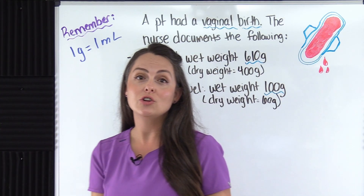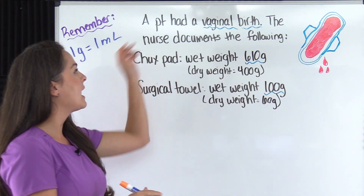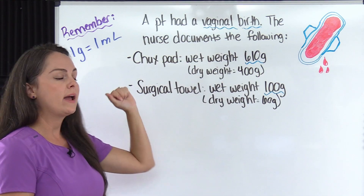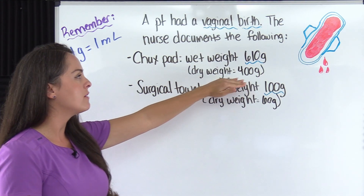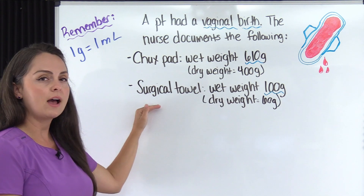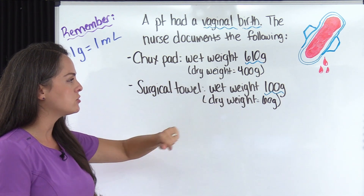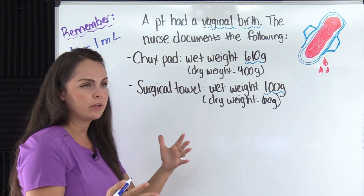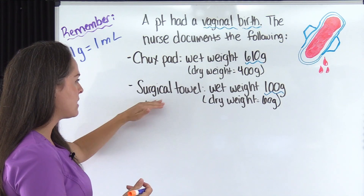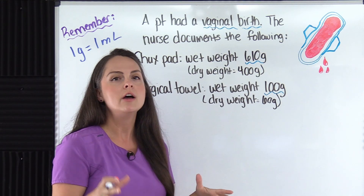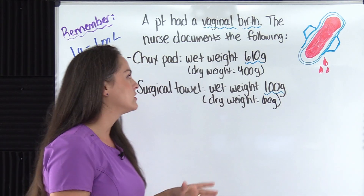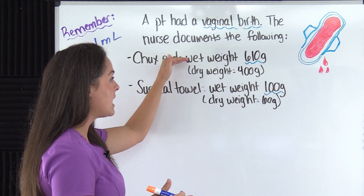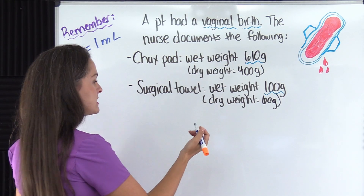Now let's calculate and take a look at our first problem. A patient had a vaginal birth. The nurse documents the following: a chux pad with a wet weight of 610 grams that normally has a dry weight of 400 grams, and a surgical towel with a wet weight of 100 grams that normally has a dry weight of 60 grams. Make sure to note how many items we're dealing with — here we have one chux pad and one surgical towel. That's really important because sometimes people forget to multiply extra ones and get their calculation wrong. What we're going to do is take the wet weight of each item and subtract its dry weight.